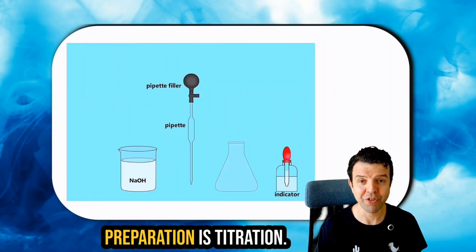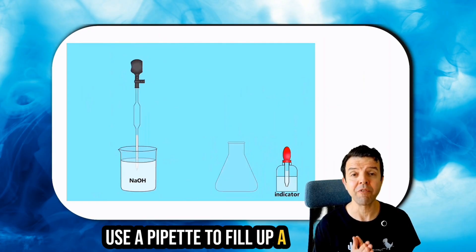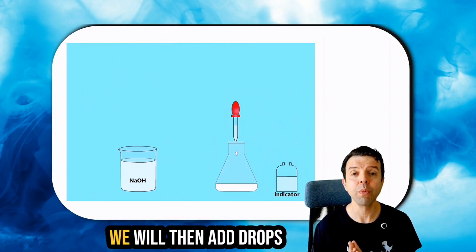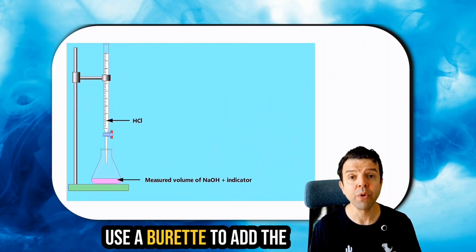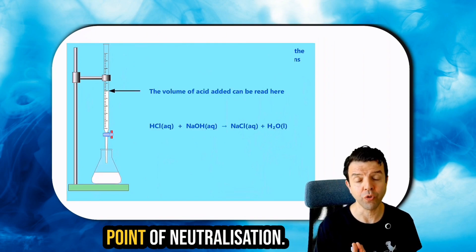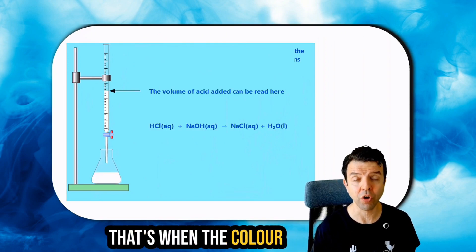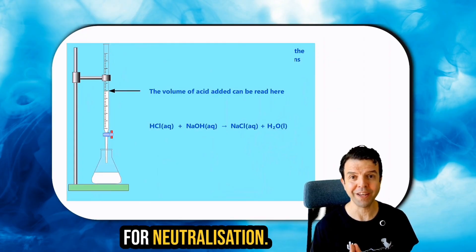The second method of salt preparation is titration. In step one, we're going to use a pipette to fill up a flask with sodium hydroxide. We will then add drops of an indicator such as phenolphthalein. Following this, we will use a burette to add the acid to the alkali until the point of neutralization. That's when the color of the indicator changes. We will record the volume of acid needed for neutralization.